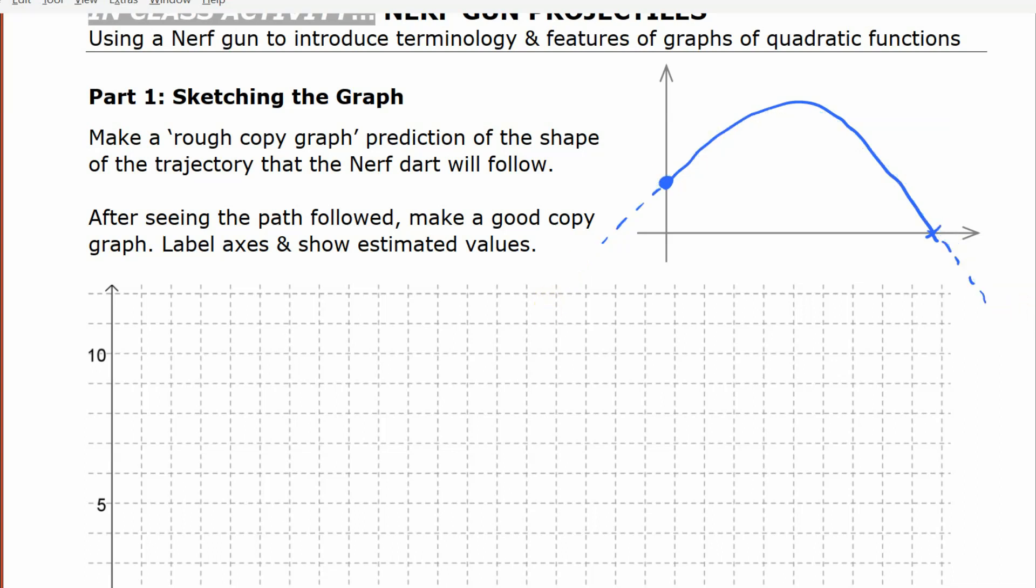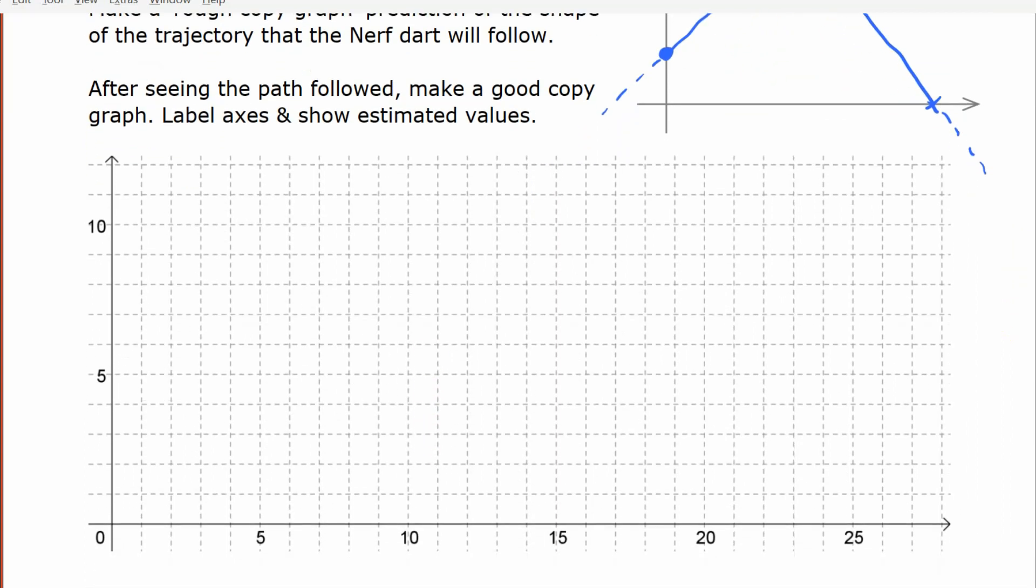This type of function is called a quadratic function, and you get that when you have something launched into the air like that, where it doesn't have an engine or its own propulsion. It's just what you call a projectile, where it's launched into the air and then that initial boost is what carries it through.